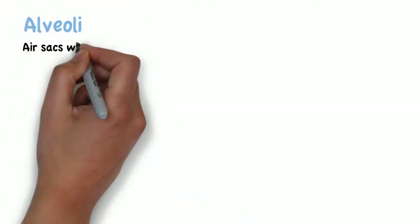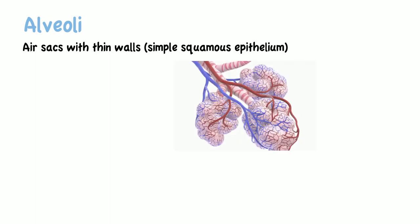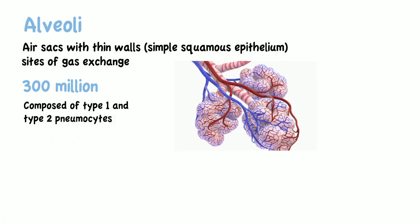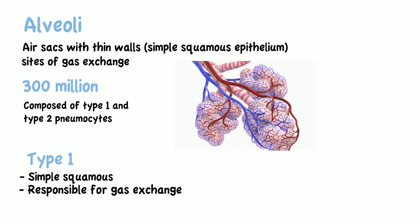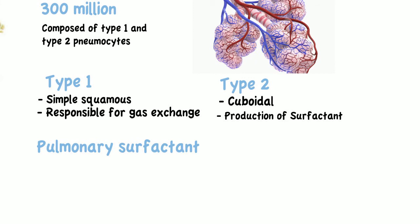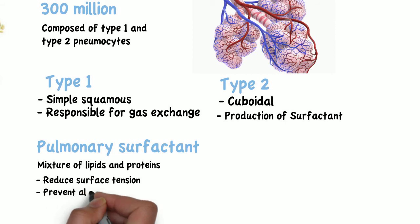Alveoli are air sacs with thin walls and are the sites of gas exchange in the lungs. There are around 300 million alveoli in adult lungs, providing a large surface area for adequate gas exchange. Alveoli are composed of type 1 and type 2 pneumocytes. Type 1 pneumocytes are simple squamous and are responsible for gas exchange, while type 2 pneumocytes are cuboidal and responsible for the production of surfactant. Pulmonary surfactant is a mixture of lipids and proteins that functions to reduce surface tension, thus preventing the alveoli from collapsing.